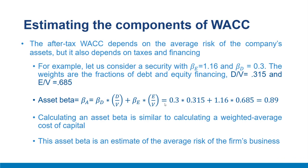In summary, we discussed estimation of CAPM components. First, company beta is estimated by regressing security returns on market returns — the slope of the regression line represents the sensitivity of the security to market movements. Next, the risk-free rate can be estimated as the difference between current government bond yields and short-term T-bill rates. Finally, estimates of expected market returns and the risk-free rate are used to estimate the market risk premium.